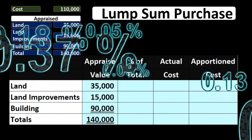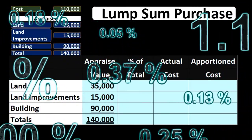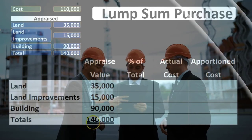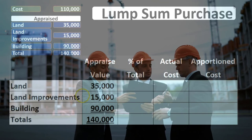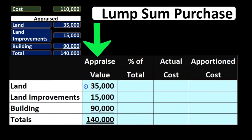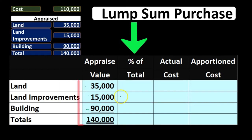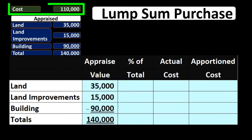One way to do that is to use a kind of ratio, and this is an important concept useful in many different areas. You'll see it in other places within accounting as well as other areas when we need to do some type of allocation or ratio analysis. We've got the appraisal amounts: $35,000 for land, $15,000 for land improvements, and $90,000 for the building, adding up to a total of $140,000. What we're going to do is take the percentage of the total for each of these and use that percentage to allocate the $110,000.